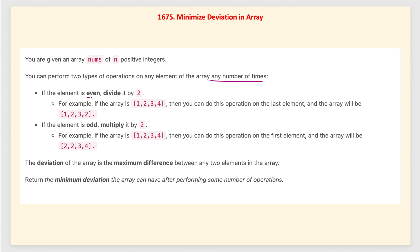The first operation is: if the number is even, we can divide it by 2. For example, if we take 4, it is even so we can divide it by 2 to get 2, and we can further divide it since the operation can be applied any number of times. The second operation is for odd numbers: if the number is odd, we can multiply it by 2. For example, 1 is odd so we multiply by 2, and the odd number becomes even.